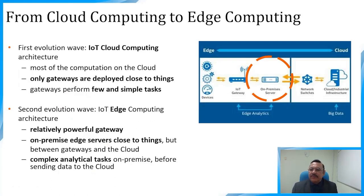The first evolution wave of IoT computing architecture had most computation happening at the cloud, with gateways deployed close to things performing few and simple tasks. However, cloud models are not designed for the volume, variety, and velocity of data that IoT generates. The second evolution wave — IoT edge computing architecture — uses relatively powerful and intelligent on-premise edge servers located close to things but between gateways and the cloud, where complex analytical tasks are performed on-premise before sending data to the cloud.